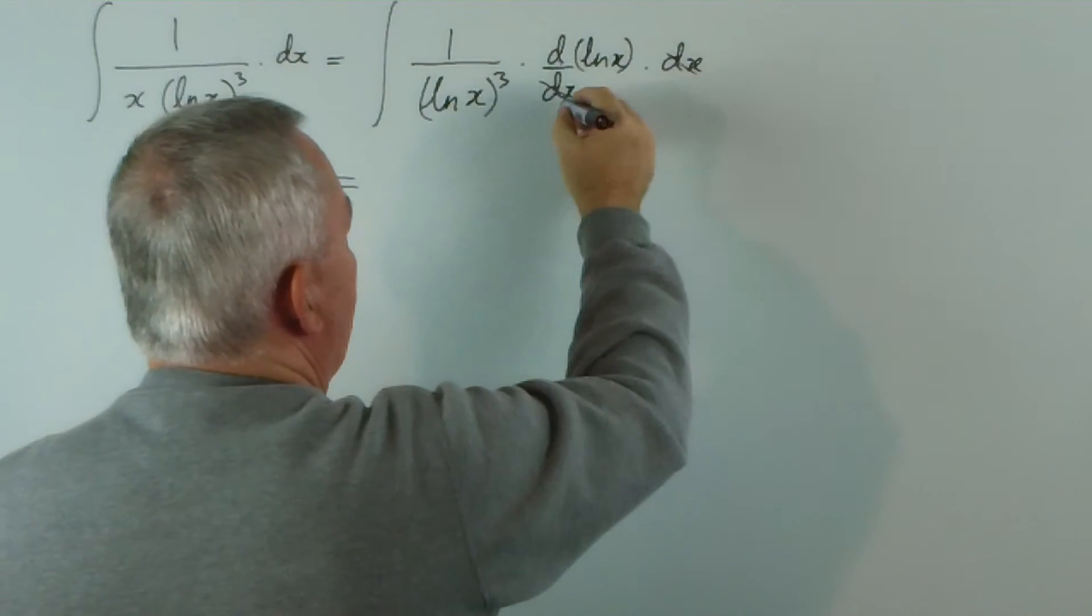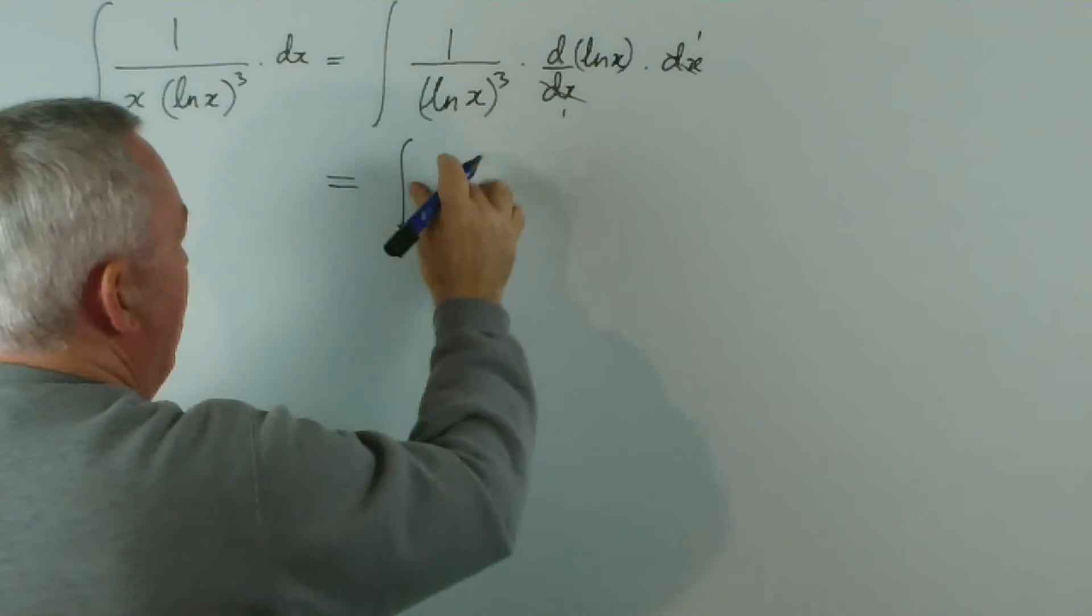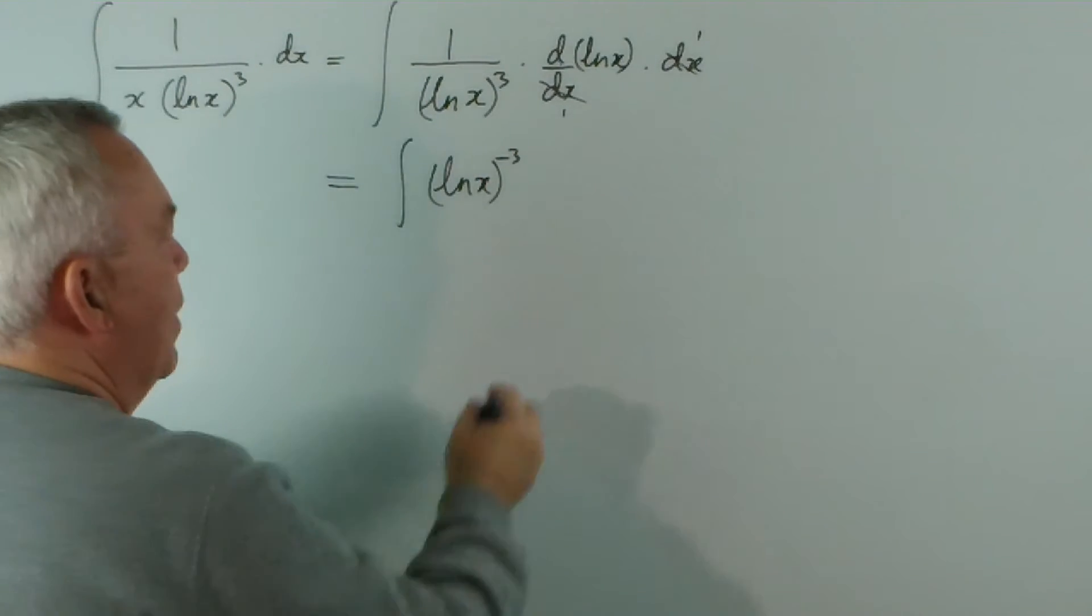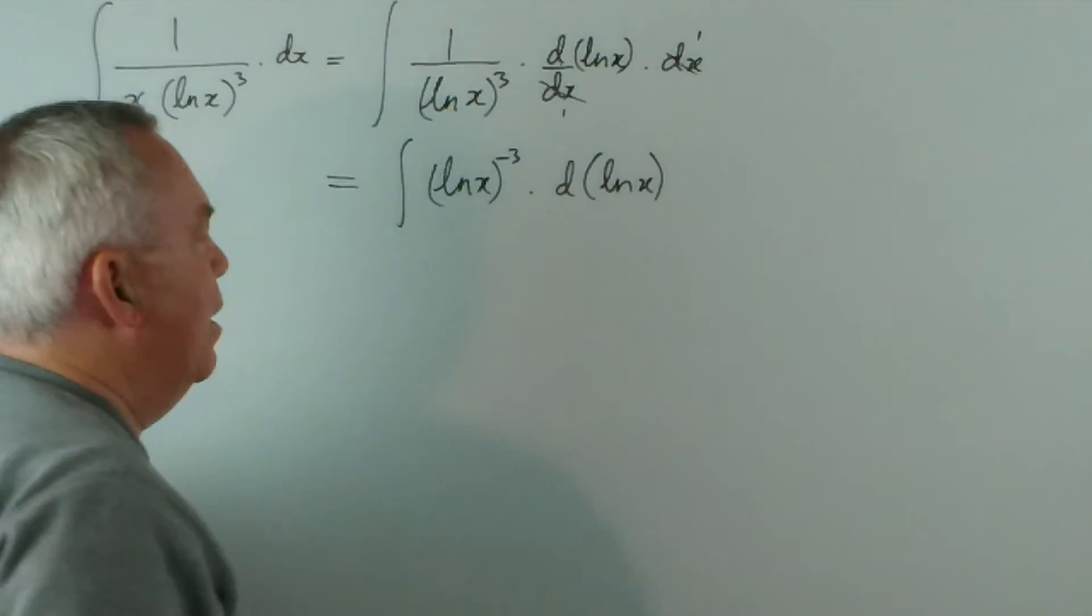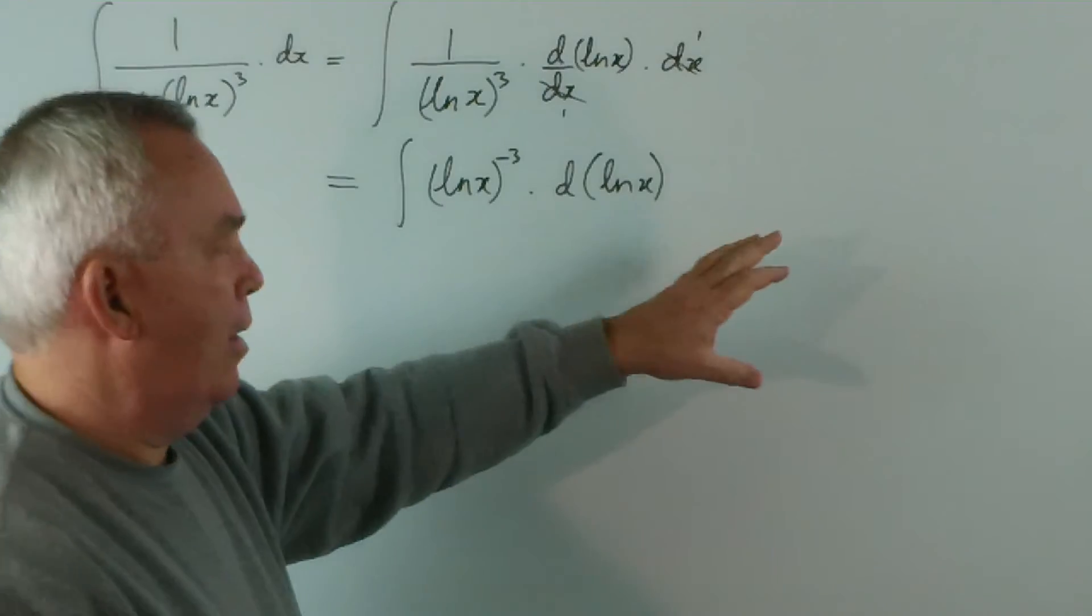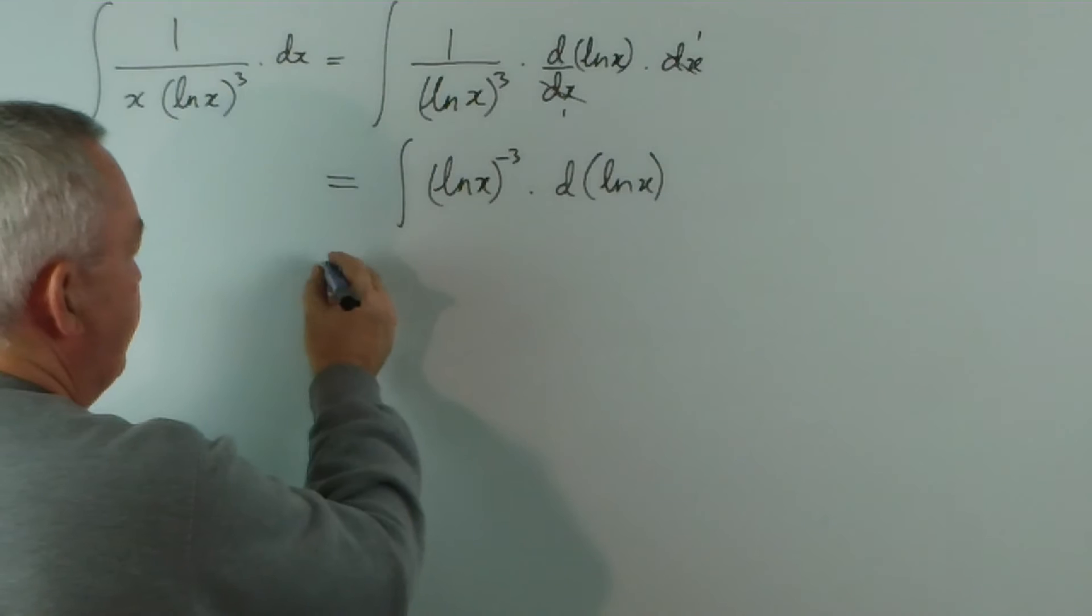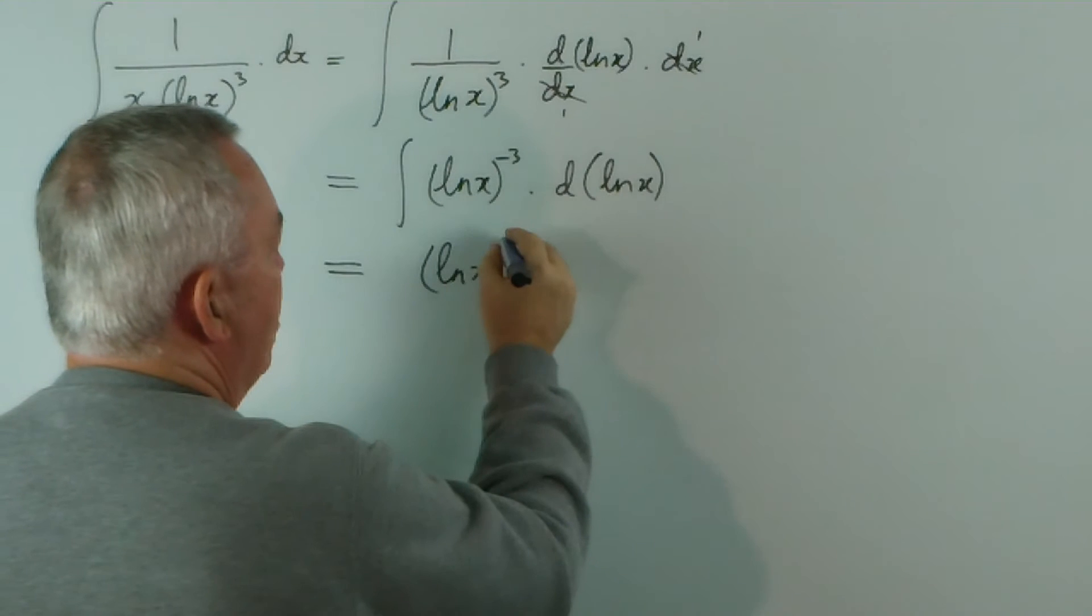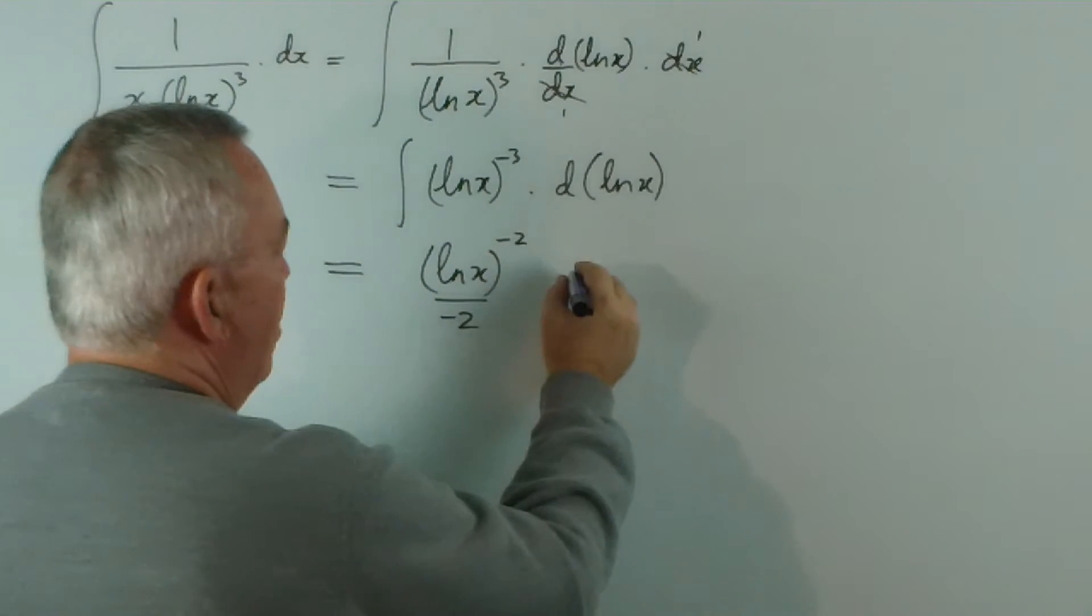This is just the same as having u to the negative 3 du, but without going to all the trouble of writing a substitution on the side. The integral, of course, is going to be log x to the negative 2 over negative 2 plus c.